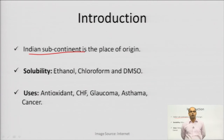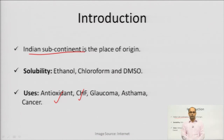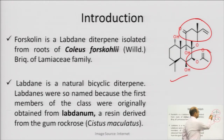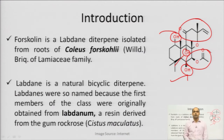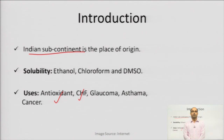Regarding the uses of Forskolin, it is an excellent antioxidant. It is also used in chronic heart failure, glaucoma, asthma, and even in cancer. Due to the polyhydroxy (OH) groups in the structure of Forskolin, it acts as a potent antioxidant drug, which is why it has beneficial effects in all kinds of diseases, be it asthma, glaucoma, or cancer.